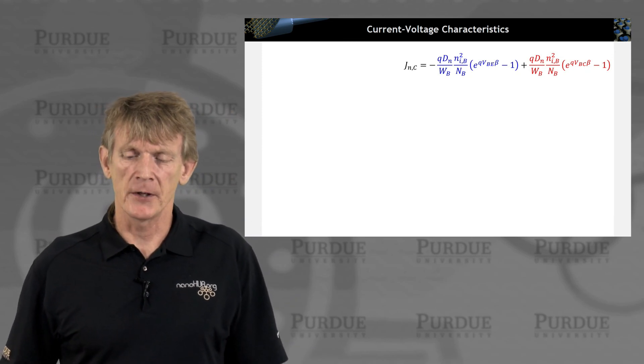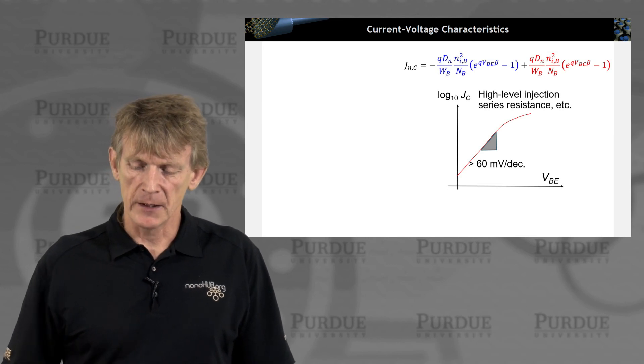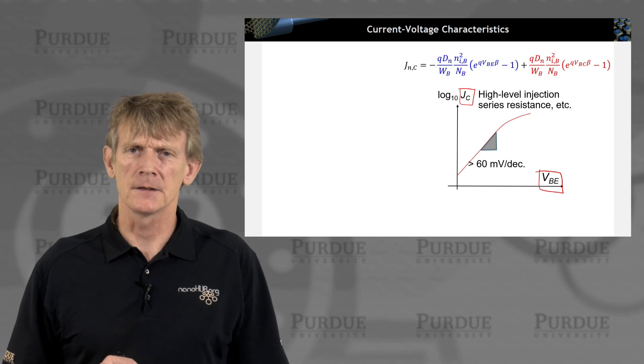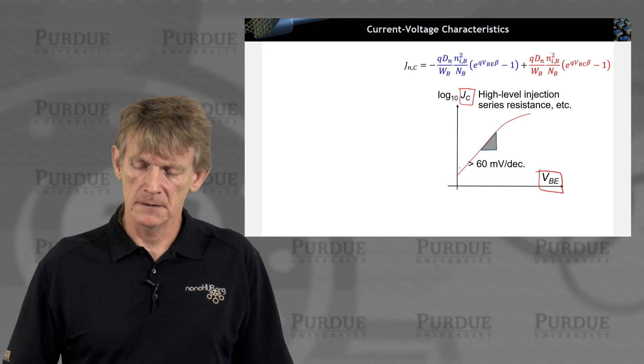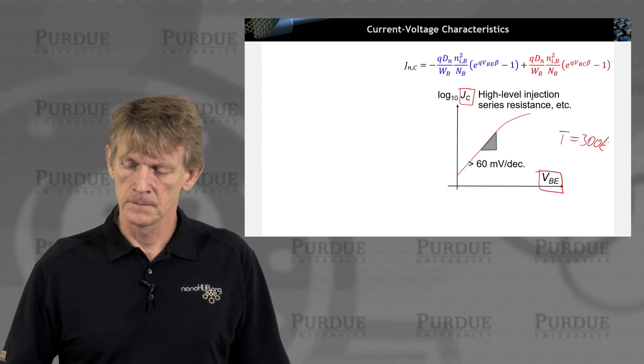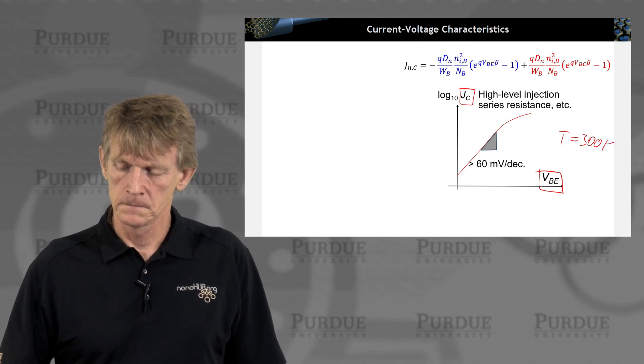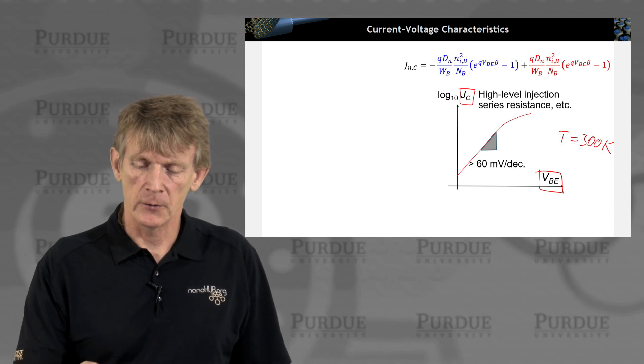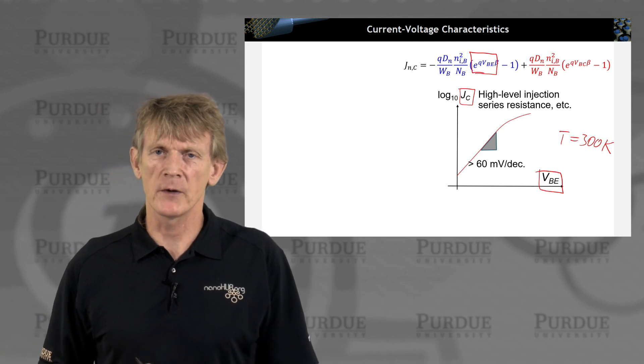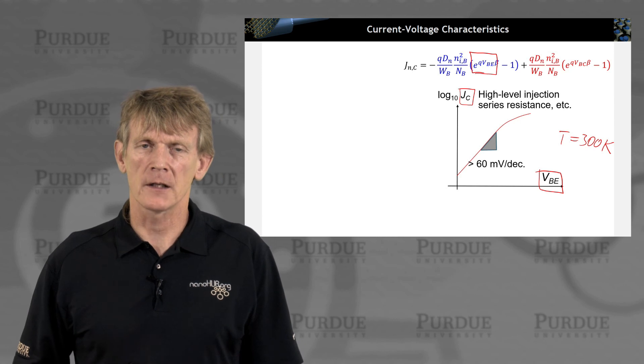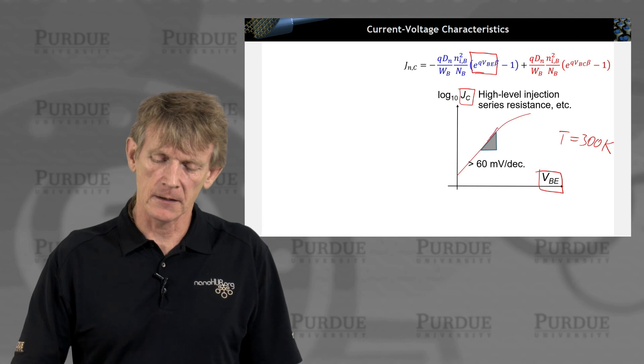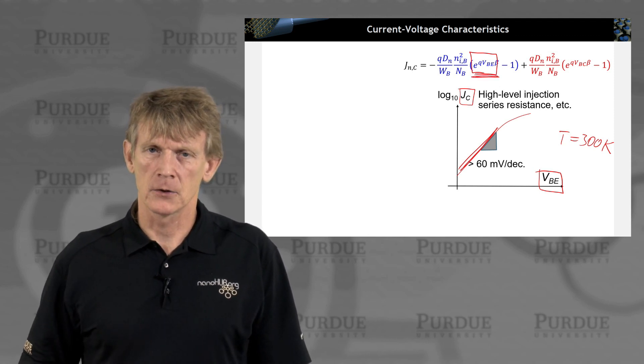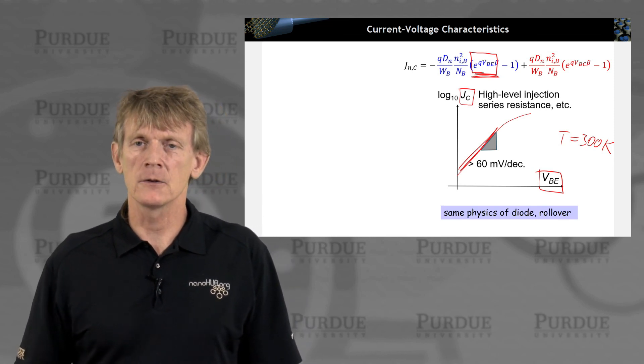Let's look at these expressions. If I plot as a log the current in the collector as a function of VBE, and if I do it on a log 10 basis, I can see that at T equals 300 Kelvin, I get a slope of 60 millivolt per decade, which is coming from this term here. At room temperature. So the best you can get out of this transistor is an increase of 60 millivolt per decade. It's the same physics as a diode. It has the same rollover.